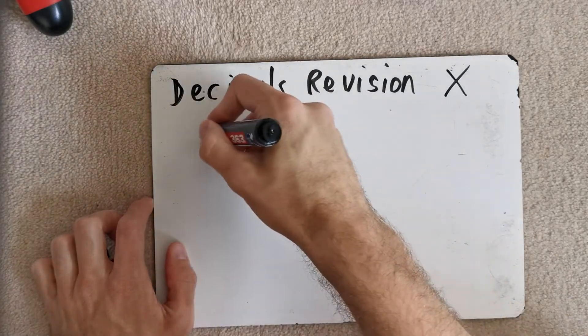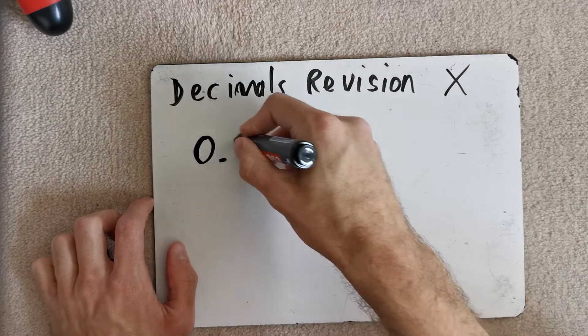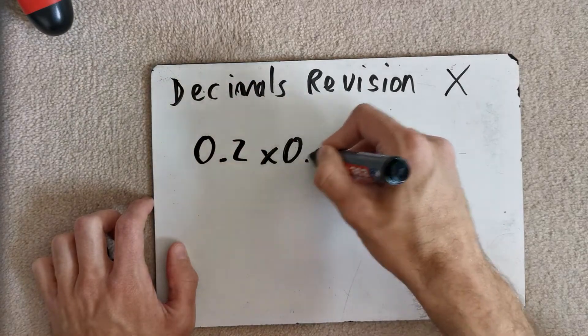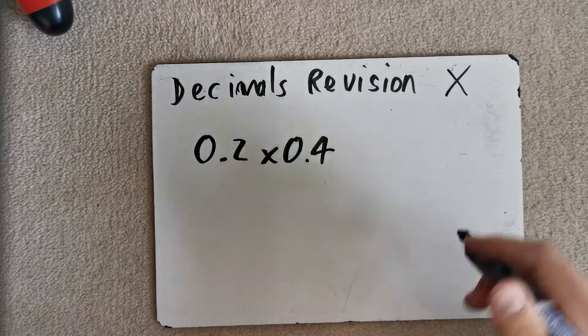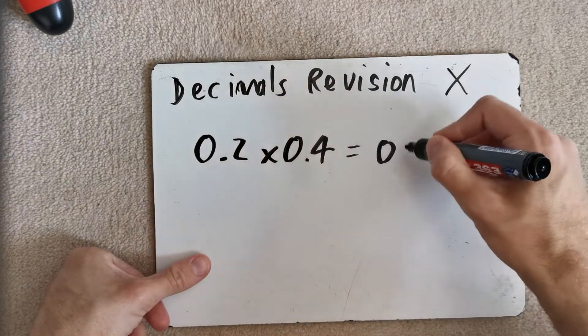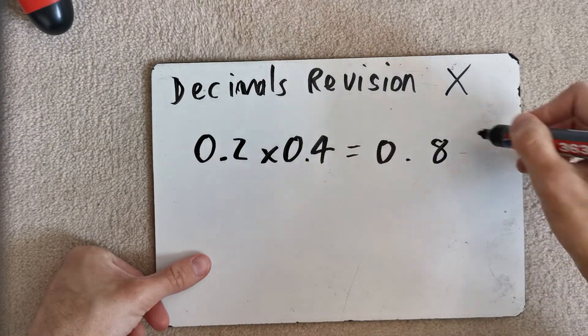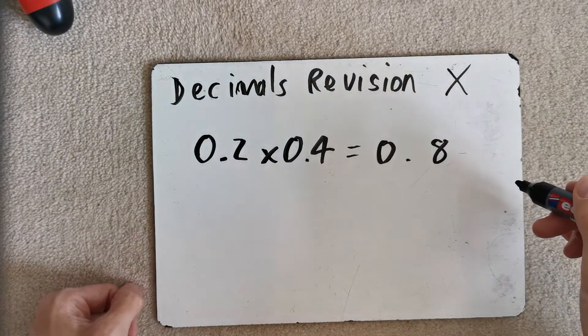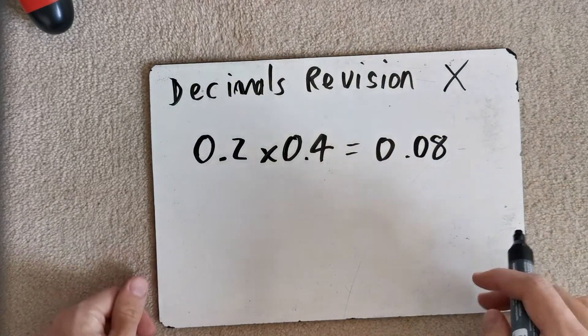If you're given just a simple one like this, 0.2 times 0.4, a lot of people get this wrong and put this as 0.8, which is actually incorrect. Okay, the correct answer is actually 0.08.